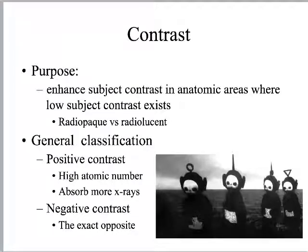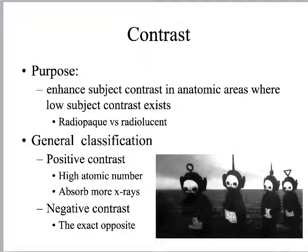In terms of general classification, we have positive contrast. A key terminology note: radio-opaque and radiolucent. Radio-opaque means the x-rays couldn't get through — it will show up as white on the image. That's positive contrast. Radiolucent means the x-rays got straight through it, and it's going to show up as black on the image. That seems reversed from normal thinking, which is why this terminology is worth stressing.